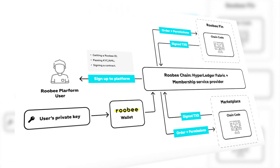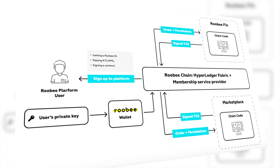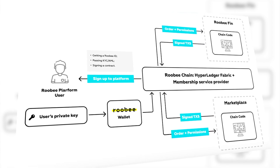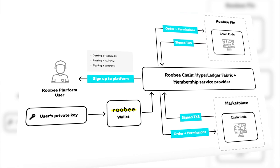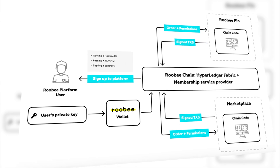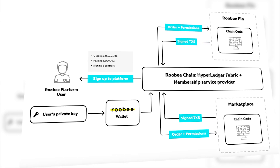Over time, a proprietary blockchain called Ruby Chain will be developed for the Ruby platform itself, which will be based on the Hyperledger Fabric and the public Ethereum blockchain.